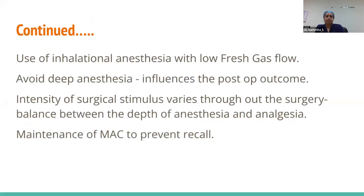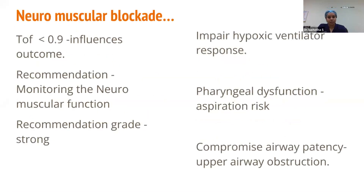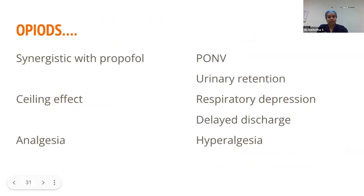Inhalation anesthesia should be used with low fresh gas flow, and deep anesthesia should be avoided since surgical stimulus varies throughout the procedure, requiring a balance between depth of anesthesia and analgesia. Inadequate reversal of neuromuscular blockade can impair hypoxic ventilatory response, cause pharyngeal dysfunction with aspiration risk, and cause upper airway obstruction — so ERAS recommends monitoring of neuromuscular function. Opioids act synergistically with propofol and provide excellent analgesia, but carry side effects including PONV, urinary retention, respiratory depression, delayed discharge, and hyperalgesia.